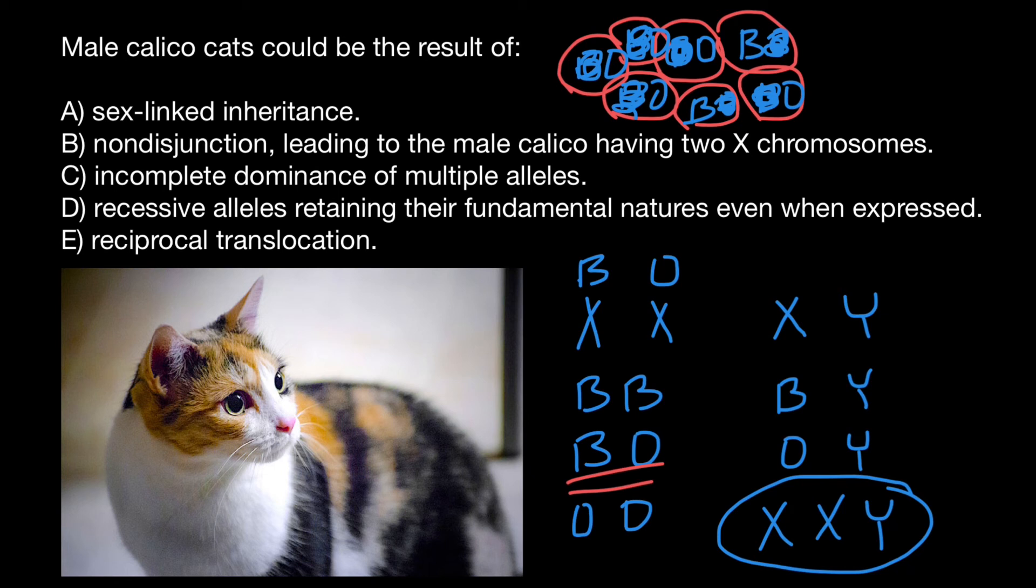And later on, each cell would divide due to mitosis. And in each cell, only that X chromosome with O allele on it would be active and another X chromosome would be deactivated. So later, this cell would lead to the many, many cells, because each this cell also would divide. And this would lead to patch of the orange. And for example, this cell also would divide and lead to a patch of the black pigment of the fur.